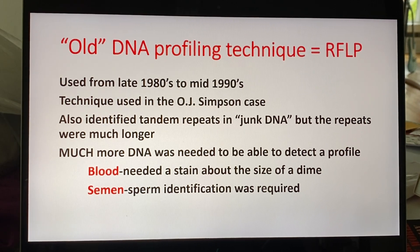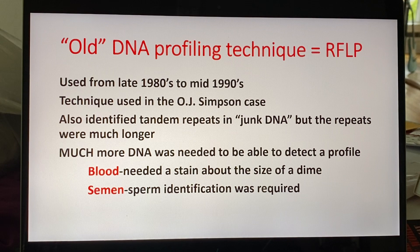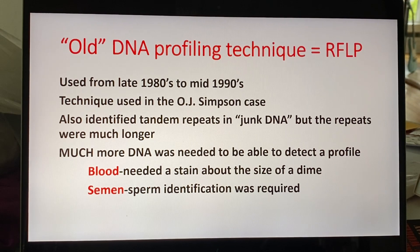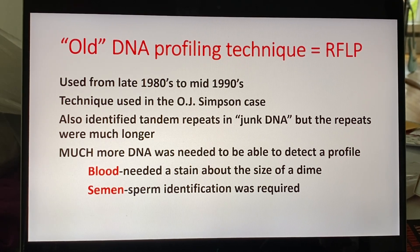That's kind of asking a lot when you're dealing with forensic samples, because we're dealing with decomposing tissues and DNA that's been exposed to conditions like high humidity and sunlight, which will break down and degrade the DNA. So RFLP was great in terms of being able to differentiate people, but you had to have way more of a sample. For blood, you needed a stain about the size of a dime. For sexual assault cases, sperm had to be identified — so guys who had a vasectomy or didn't ejaculate kind of got a free pass. There were certainly limitations with this technique.